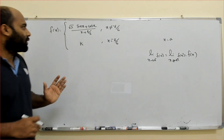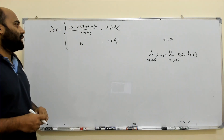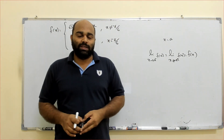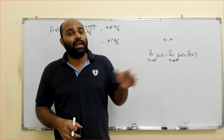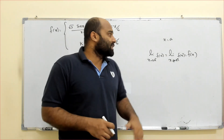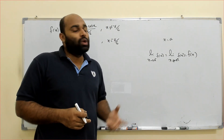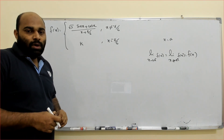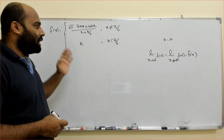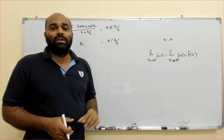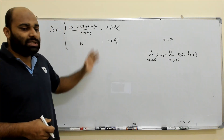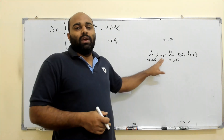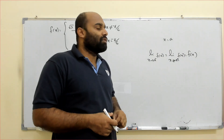Now one question I wrote on the board. f(x) equals (√3 sin x + cos x)/(x + π/6) when x is not equal to −π/6, and f(x) = k when x = −π/6. The question says this function is continuous at x = −π/6. So by continuity: limit as x tends to −π/6⁻ of f(x) equals limit as x tends to −π/6⁺ of f(x), and both equal f(−π/6).